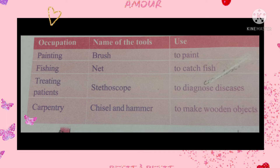Second one: fishing. The tool for fishing is a net. Use: to catch fish. Next one: treating patients. The tool is a stethoscope. Use: to diagnose diseases. Next one: carpentry. The tool used for carpentry is chisel and hammer. Use: to make wooden objects.